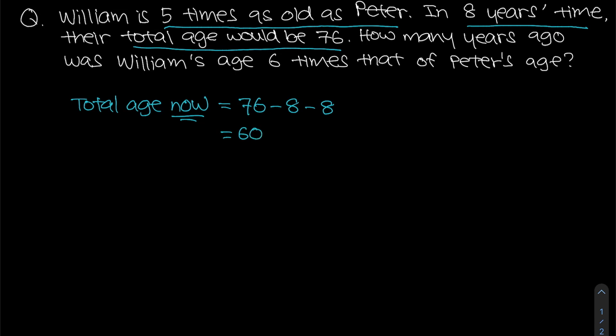So we take 76 minus eight twice, which gives us a total age of 60. This total age of 60 is their combined age right now.